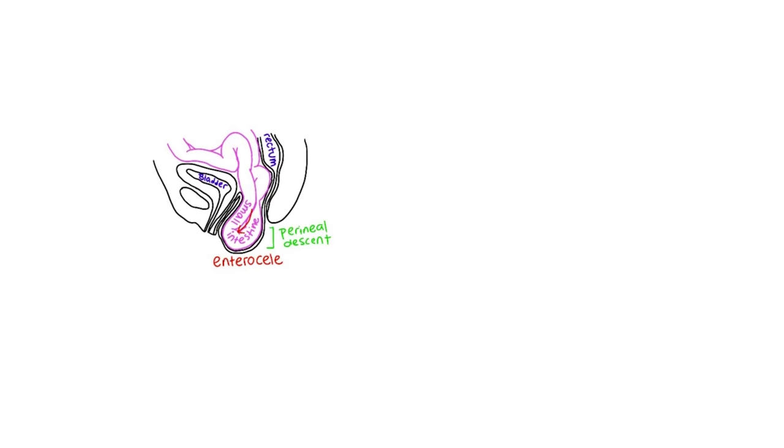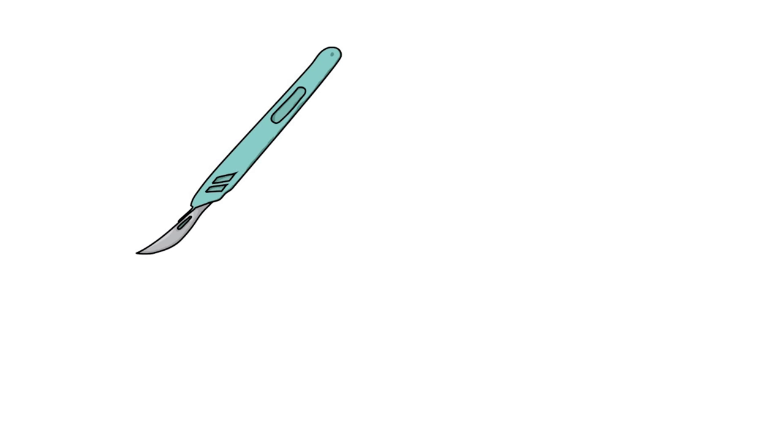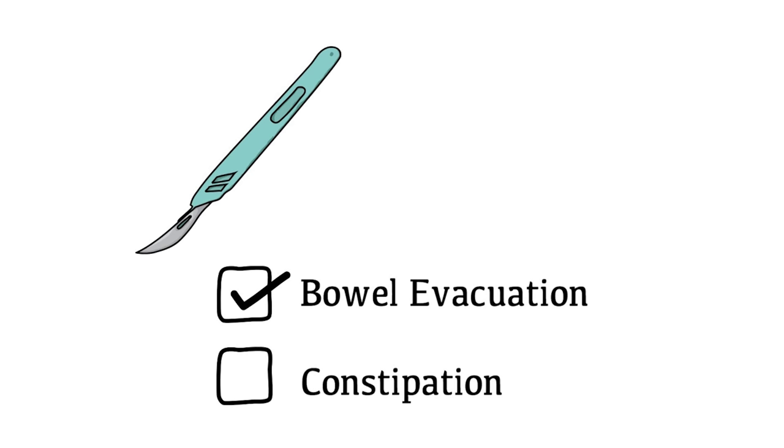Patients with enterocele or rectocele may complain of incomplete bowel emptying. They may use digitation to evacuate the stool vaginally and or rectally or perform perineal splinting. Although surgically correcting a rectocele will help with bowel evacuation, it will not fix the constipation. It is important to talk to the patient about what will and will not improve with treatment.